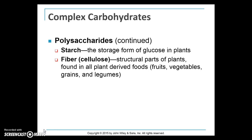Starches are the storage form of glucose in plants, made up of glucose molecules linked in either straight or branched chain forms, used for plant growth and reproduction. When we eat plants, we consume the energy stored in starch. Fiber, or cellulose, is a type of complex carbohydrate that can't be broken down by human digestive enzymes and is not absorbed in the small intestine.